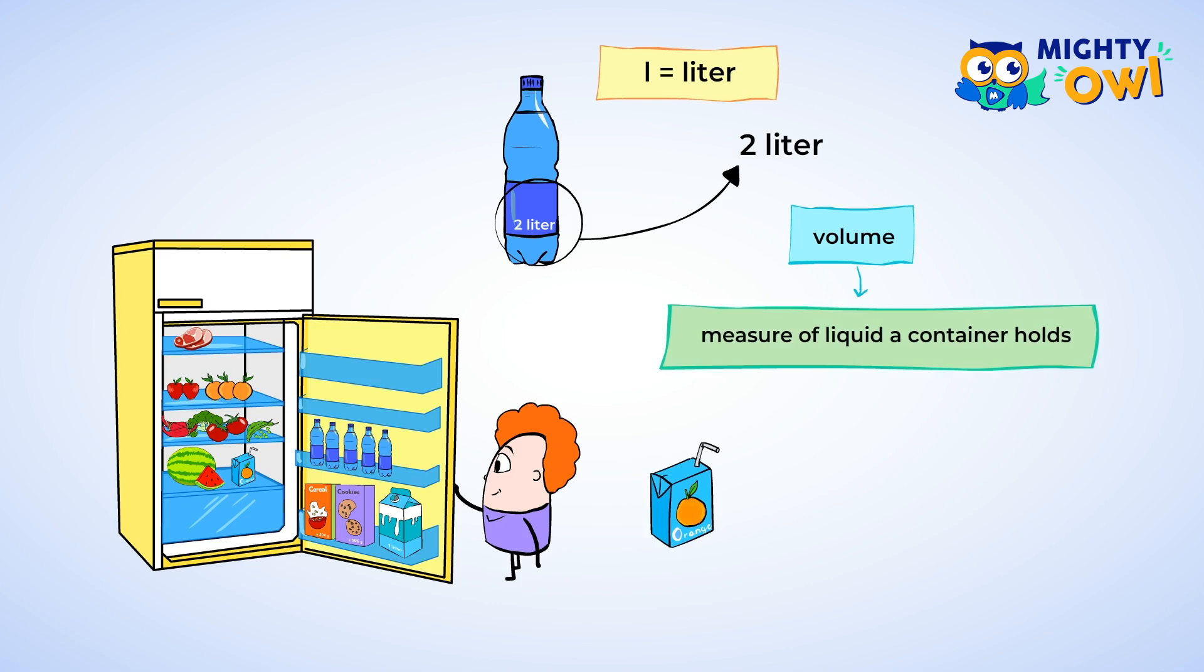Smaller containers may even be measured in milliliters, and use the letters ML. Milliliters are used to measure items like shampoo or medicines. You can take a look around your bathroom or your kitchen and see all the different kinds of measurements. One thousand milliliters is equal to one liter.